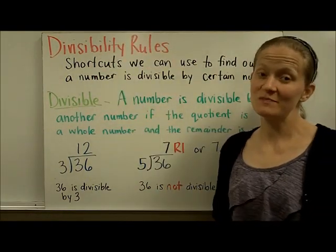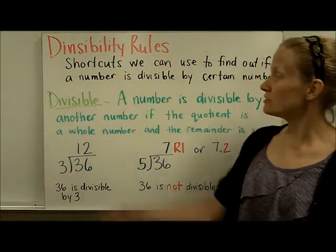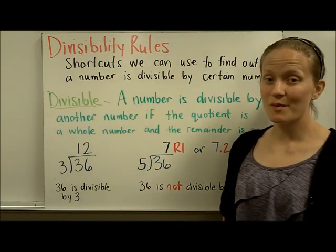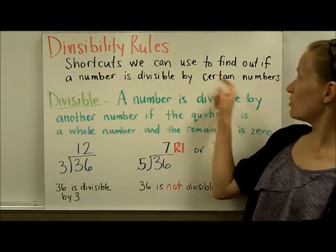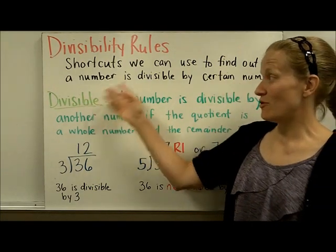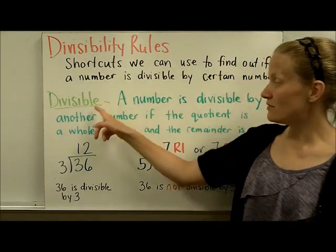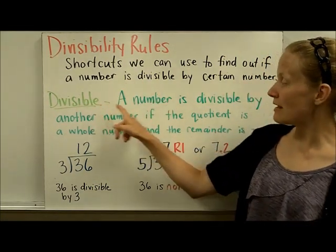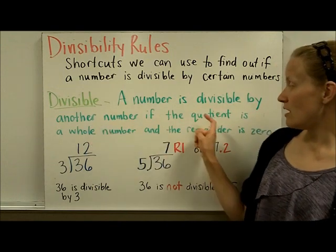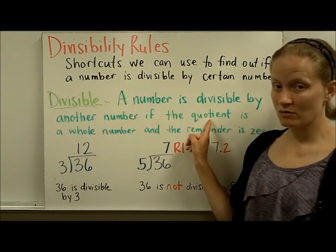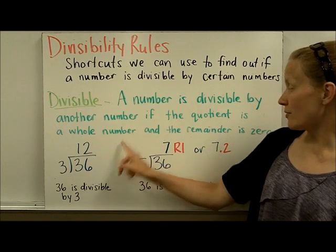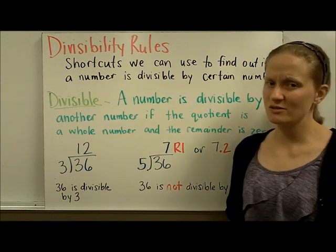Divisibility rules are shortcuts that we can use to find out if a number is divisible by certain numbers. We have to know what divisible means. A number is divisible by another number if the quotient, or the answer to a division problem, is a whole number and the remainder is zero.